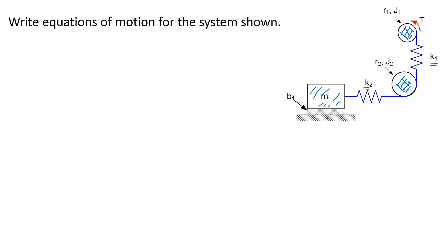The first thing we have to do is define our variables and their sign convention. The rotation of pulley 1 I'm going to call theta 1, and its assumed positive direction is going to be counterclockwise. That choice is entirely arbitrary. For pulley 2, I'm going to assume its positive rotation theta 2 is clockwise. And finally, for the mass, I'm going to assume that its positive displacement is to the right, and the name of that variable is x.